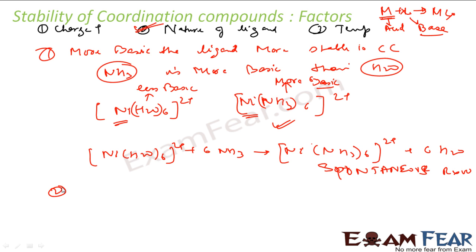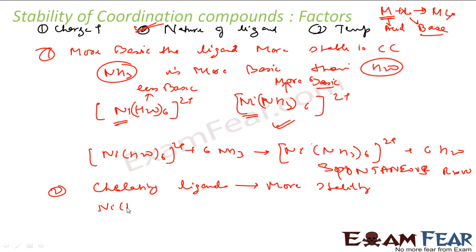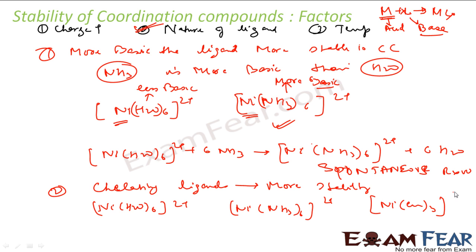The reaction Ni(H₂O)₆²⁺ + excess NH₃ → Ni(NH₃)₆²⁺ + 6H₂O is spontaneous. Furthermore, chelating ligands give even more stability because they form ring-type structures. Comparing Ni(H₂O)₆²⁺, Ni(NH₃)₆²⁺, and Ni(en)₃²⁺: Ni(en)₃²⁺ is the most stable due to chelate ring formation, followed by the ammonia complex, with the water complex being least stable.